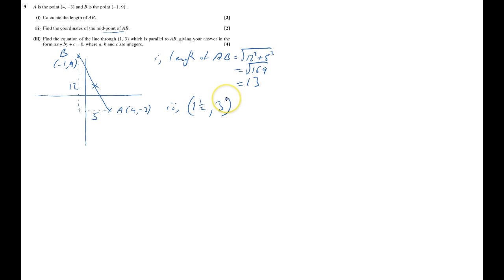You could have, of course, worked out the average of the x's, so you could have done (-1 + 4) / 2, and the average of the y's, (9 - 3) / 2, and done it like that. But again, I prefer to use my diagram and just find it. 2 marks.